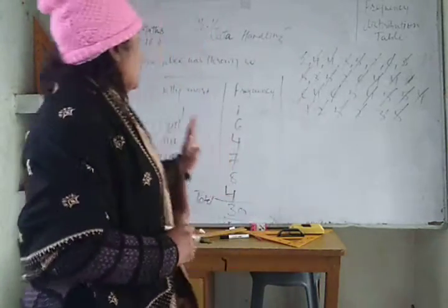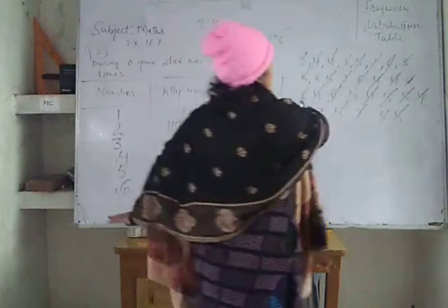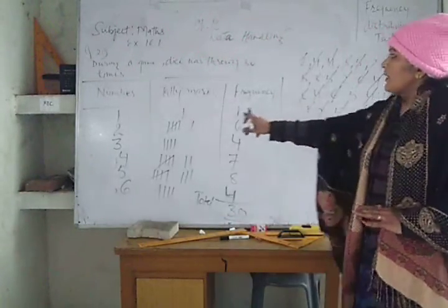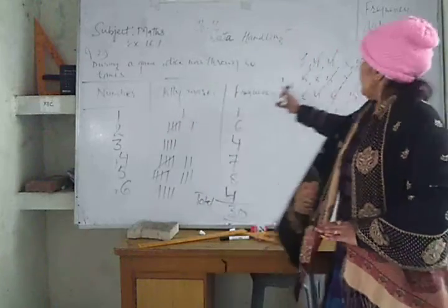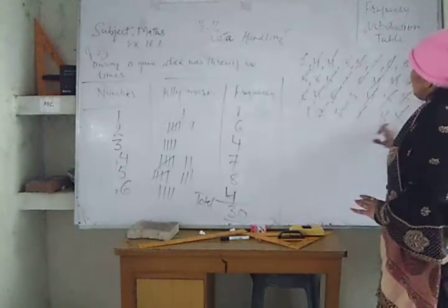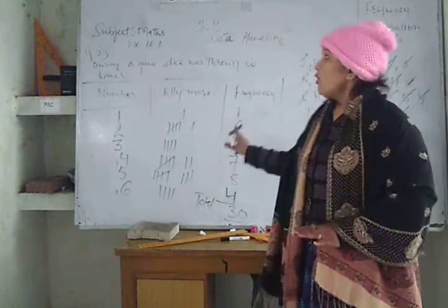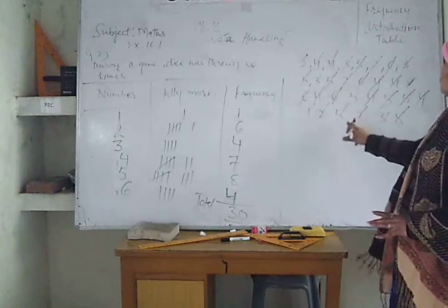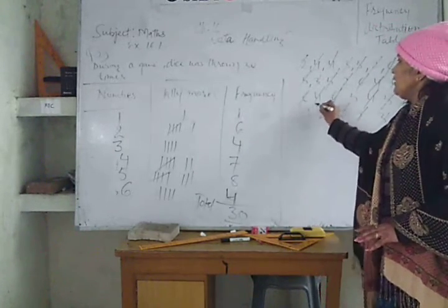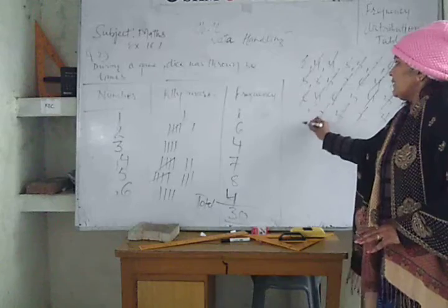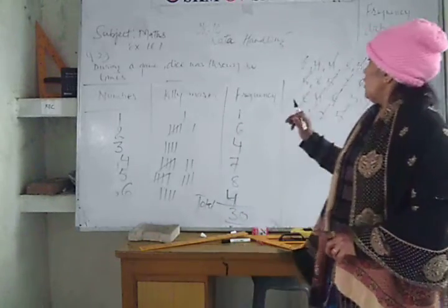In these outcomes, we have started from the lowest number, that is 1. So in these outcomes, 1 is how many times? Looking at the outcomes, 1 is 1 time. So in tally marks, 1 frequency is 1.